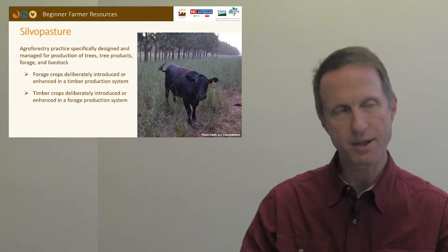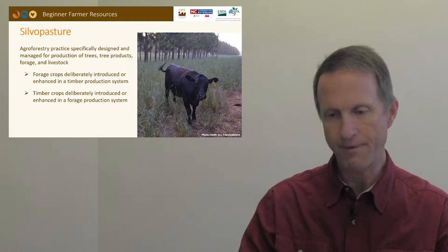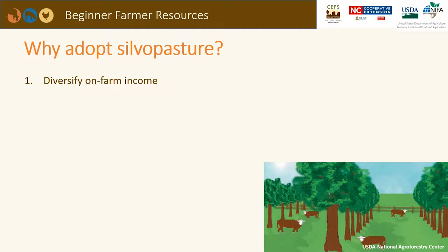There are two ways silvopasture is usually adopted: one where a timber manager wants to add value with livestock, and the other where a livestock manager wants to add trees for added income and/or comfort of the animals. So why adopt silvopasture? There's an opportunity to diversify on-farm income and increase biological diversity with a different range of animals, plants, and species on the land.